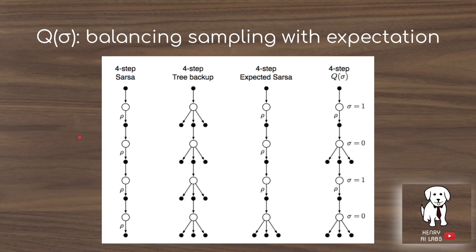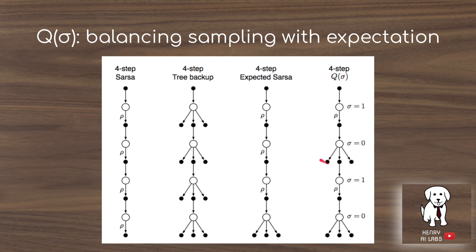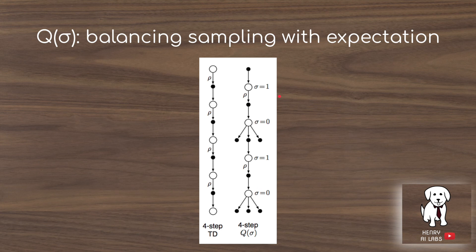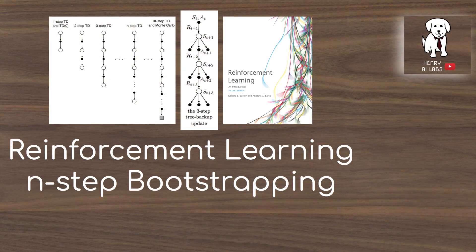The Q-sigma framework balances importance sampling — using target and behavior policies — with taking the expectation. Even with a target and behavior policy, you can take the expectation to get a value estimate without sampling real experience. The sigma parameter controls how frequently you trade off between sampling and expectation for bootstrapping intermediate state-action values. A comparison shows the four-step TD with importance sampling versus the four-step Q-sigma algorithm with sigma equal to one alternating between importance sampling and expectation.